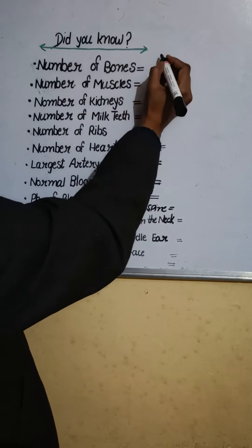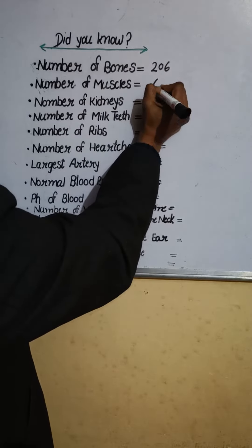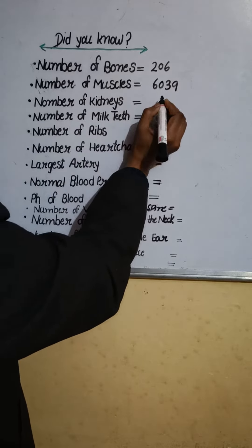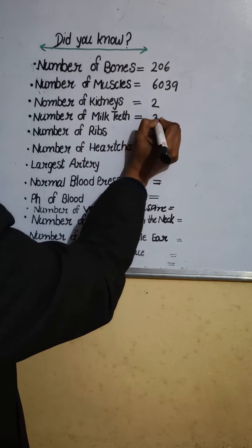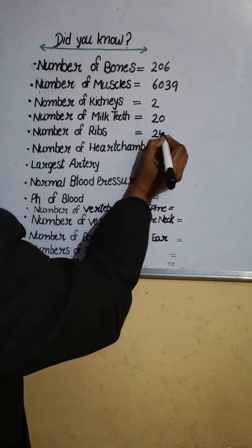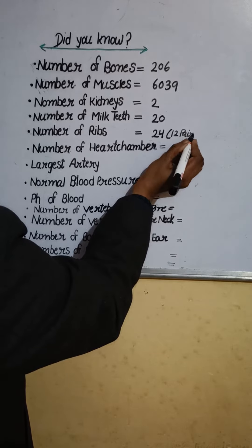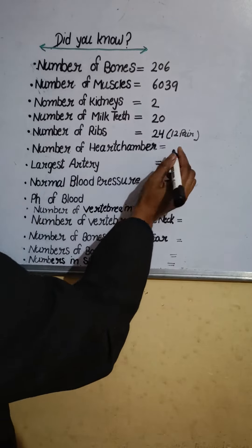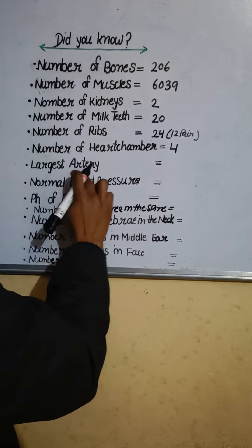Number of bones: 206. Number of muscles: 639. Number of kidneys: 2. Number of ribs: 24 (12 pairs). Number of heart chambers: 4. Number of arteries: aorta.